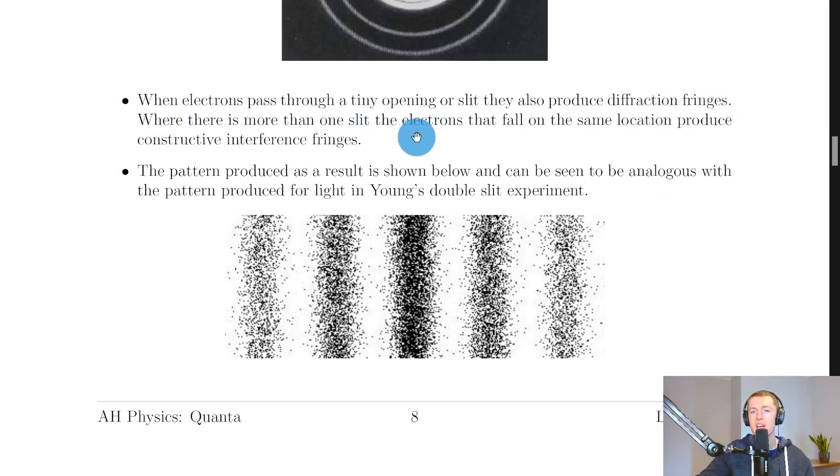When there is more than one slit, the electrons that fall on the same location produce constructive interference fringes. The pattern produced as a result is shown below and can be seen to be analogous with the pattern produced for light in Young's double slit experiment, which remember it's when you pass monochromatic light, such as laser light, through a double slit and you see a pattern of constructive and destructive interference fringes. And this is typically what we would see for electrons as well if we pass them through a double slit.